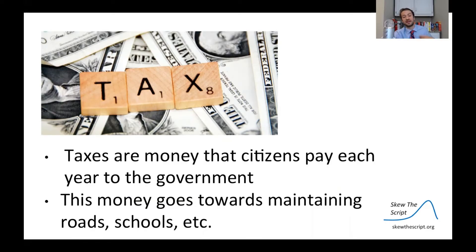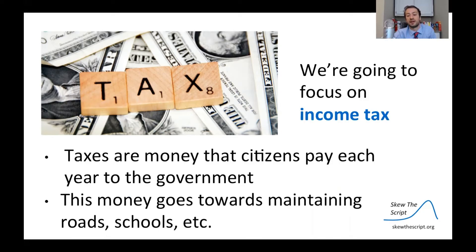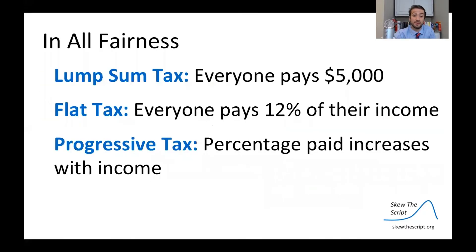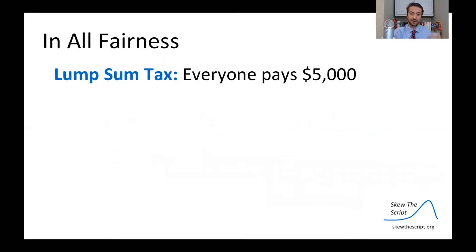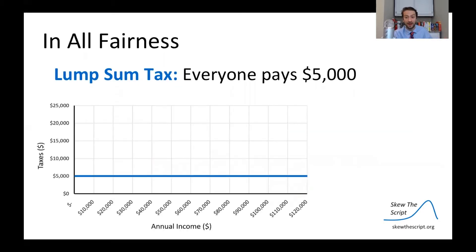Each citizen pays money each year to the government — this is what taxes are. Although it's never fun to pay, taxes go toward maintaining roads, schools, and all sorts of things the government uses to better society. We're going to focus specifically on income tax. Rehashing the three systems from the start: a lump sum tax where everyone pays the same amount, a flat tax where everyone pays the same percent, and a progressive tax where the percent increases with income.